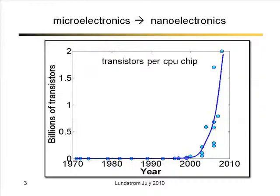Any talk on transistors should have a plot of Moore's Law. I like to do my Moore's Law plot a little differently — I do it on a linear scale. When you plot on a log scale the number of transistors on a chip per year, it just looks like everything has a positive slope. You don't really get a sense of what's happening with exponential growth unless you plot it on a linear scale. This is Intel data on the number of transistors per microprocessor chip per year. About the year 2000, there were discussions about how much longer we could continue to shrink transistors and put more on a chip.